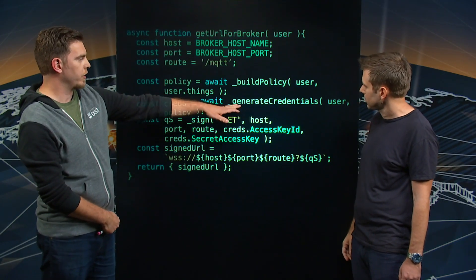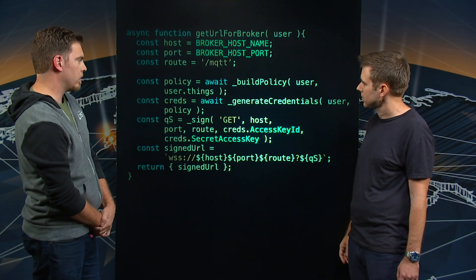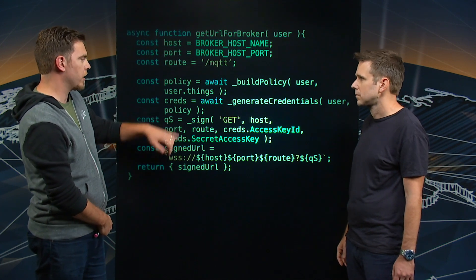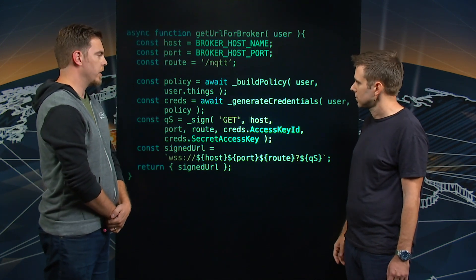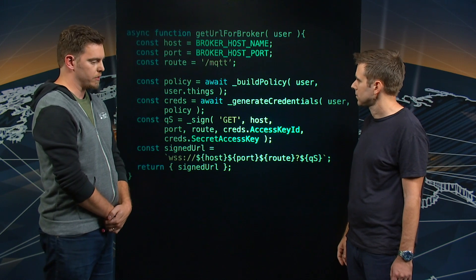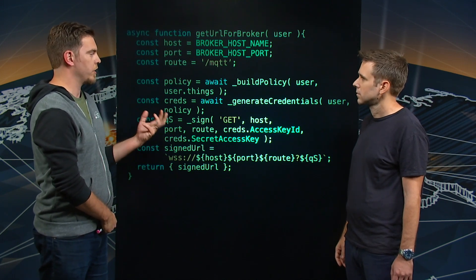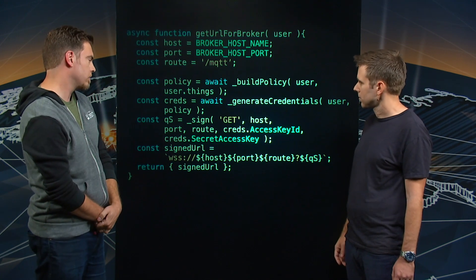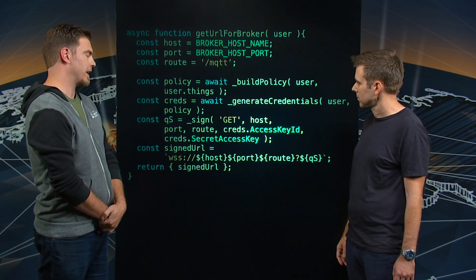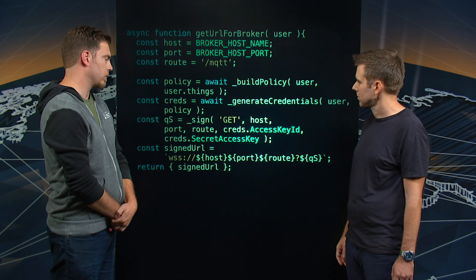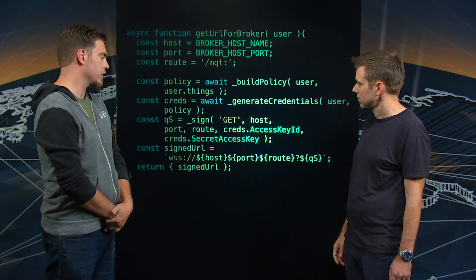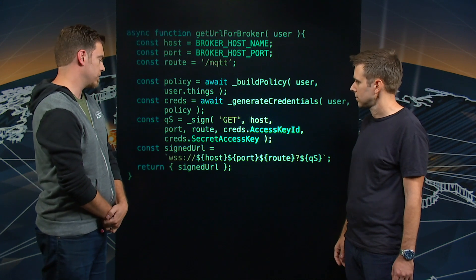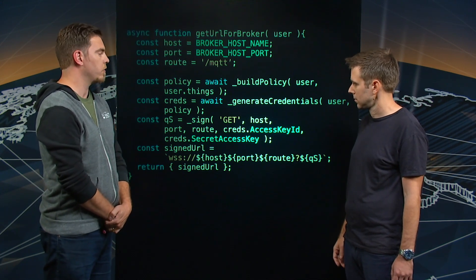So step two is to generate credentials. We're passing in both the user and the generated policy document in that function call, and that's going to generate a dynamic set of AWS credentials that can be used in step three, which is the function that's actually generating a signature that we can attach to a WebSocket URL using the SIGV4 signing algorithm.